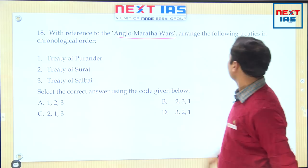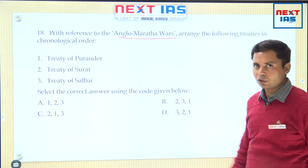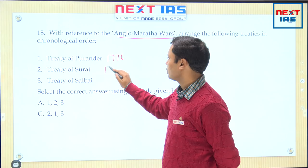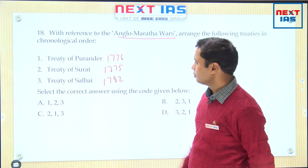Question number 18: with reference to Anglo-Maratha wars, arrange the following treaties in chronological order — Treaty of Purandar, Treaty of Surat, Treaty of Salbai. The years are: Purandar is 1776, Surat is 1775, and Salbai is 1782. To explain the background: the Peshwa was the prime minister of the Maratha kingdom. The successive Peshwas were Balaji Vishwanath, then Baji Rao, third Balaji Baji Rao, fourth Madhav Rao, next Narayan Rao.